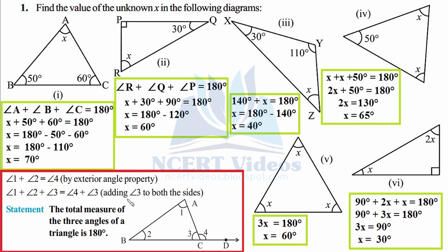The new concept learned in this exercise is that the total measure of the three angles of a triangle is 180 degrees. A triangle has three internal angles — internal because these points lie inside the triangle — and when you add them all, it gives you 180 degrees, equal to the measure of a linear pair. We can prove this using previously learned concepts.